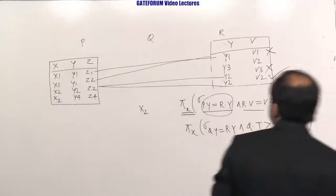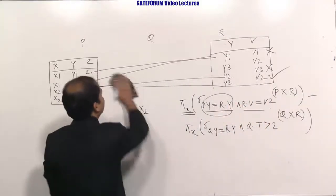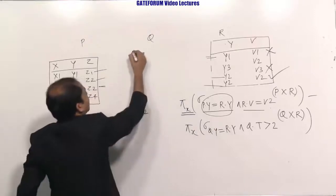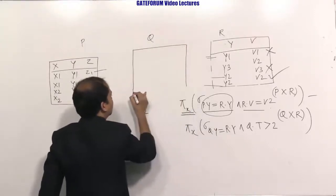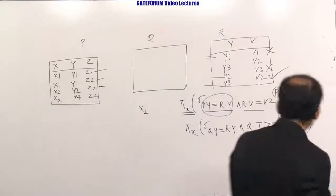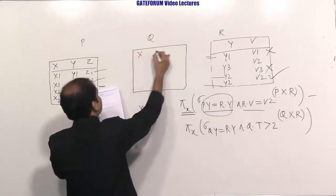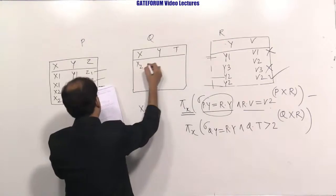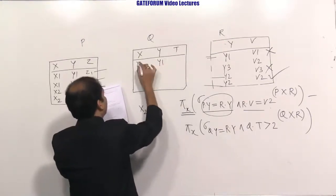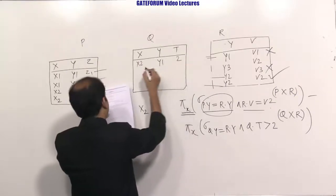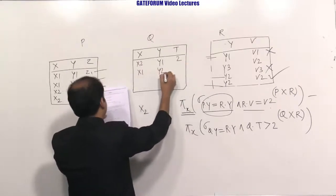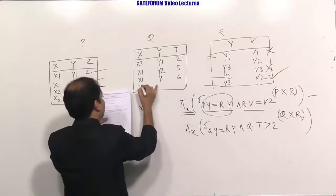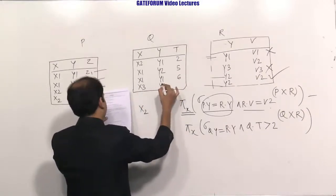For the second query on Q and R, table Q has columns X, Y, T with rows: (X2,Y1,-), (X2,Y1,2), (X1,Y2,5), (X1,Y1,6), (X3,Y3,1). Performing Q × R gives 4×4 = 16 rows. Applying Q.Y = R.Y to find matching rows, and then applying Q.T > 2.